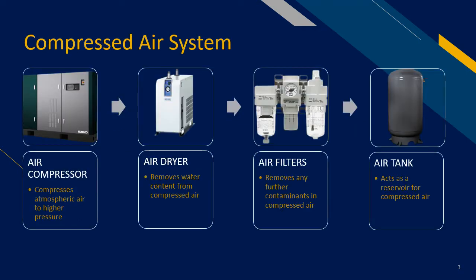First, we look at what comprises a compressed air system. The most important component is the air compressor. The function of an air compressor is to compress the atmospheric air to the pressure required for production. Typically, anything from 5 bar to 10 bar are the most common application pressure levels.